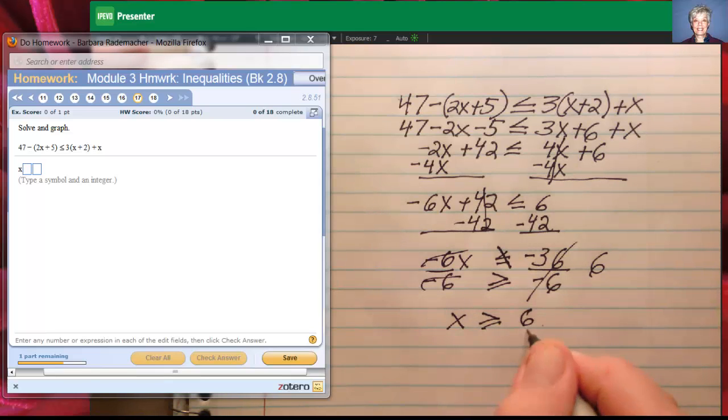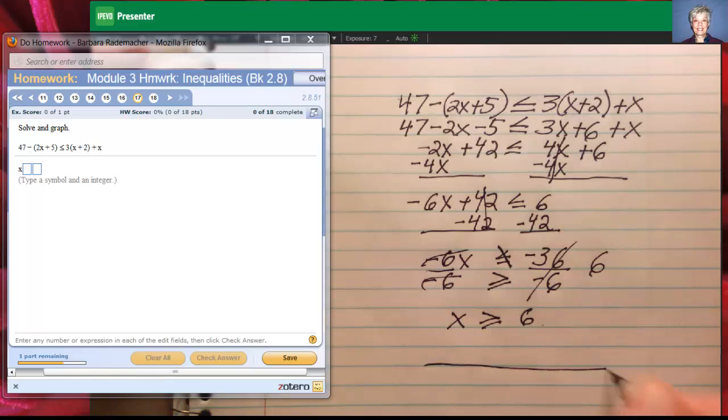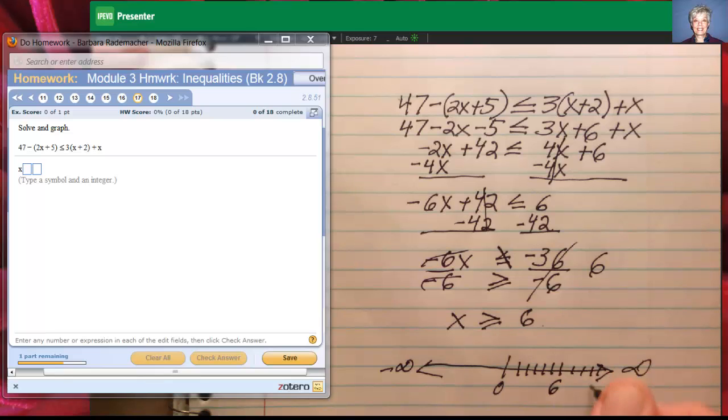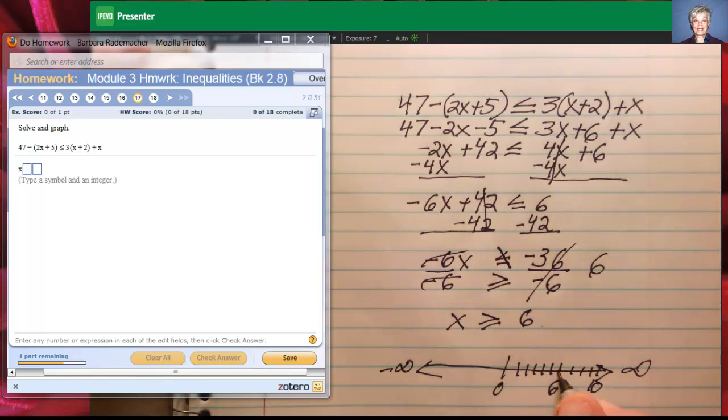That means 6 is my end point. And if I were graphing, I would draw a quick little number line like this. Here's 1, 2, 3, 4, 5, 6. There's 6. 7, 8, 9, 10. Just to get my bearings.